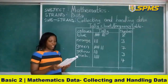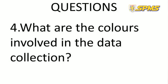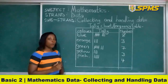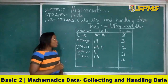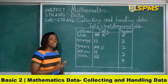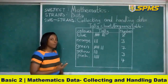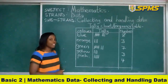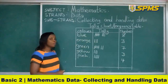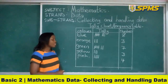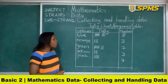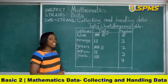Our fourth question: What are the colors involved in the data collected? You are going to look at your tally chart to identify the colors of the pencils that we had. The colors are blue, orange, green, yellow, and pink. These are the colors involved in the data collected.